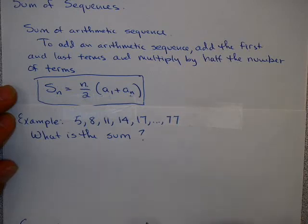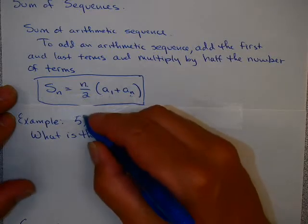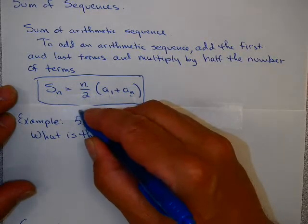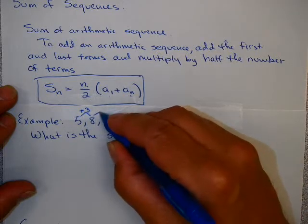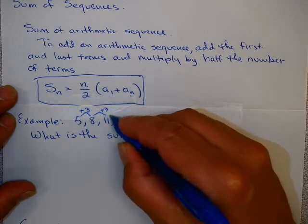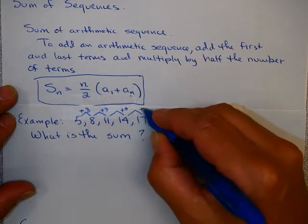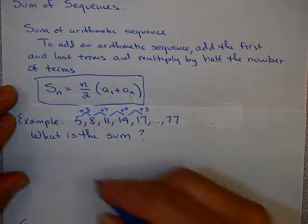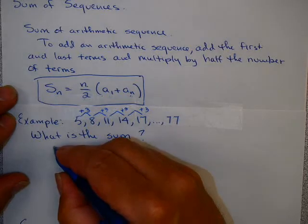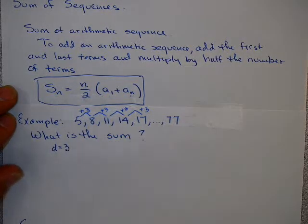Well, the first thing we ought to verify is that truly this is an arithmetic sequence. It's not too hard to see that you add 3 to 5 to get to 8. You add the same 3 to get to 11, to 14, to 17. So in this case, the common difference is 3, and it is an arithmetic sequence.